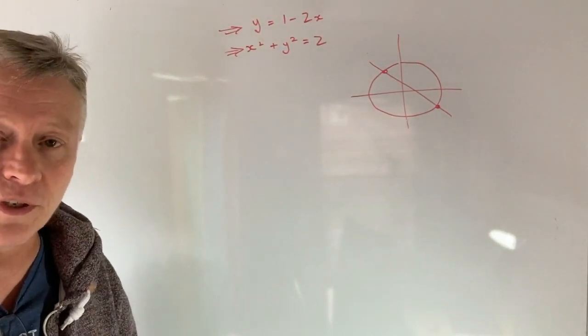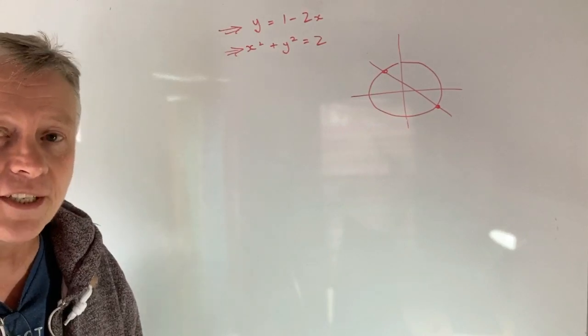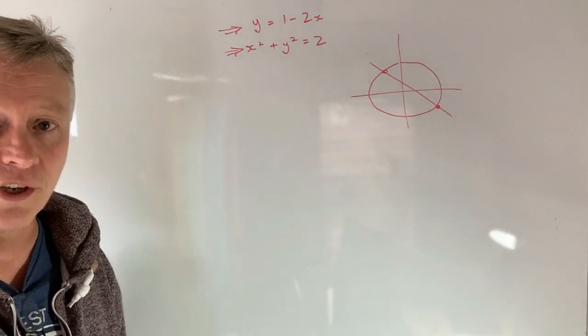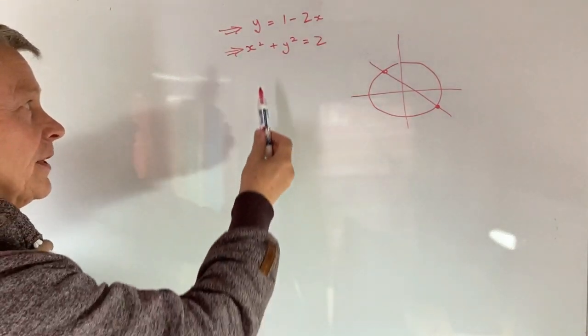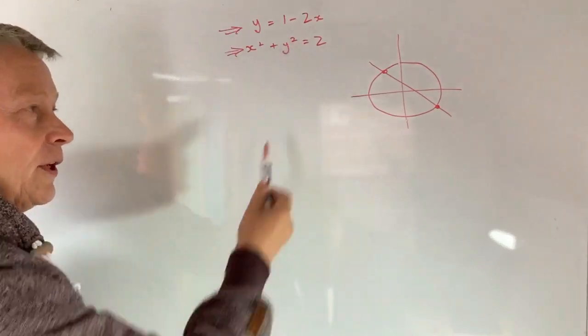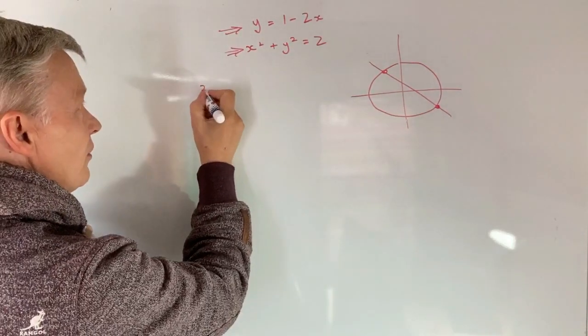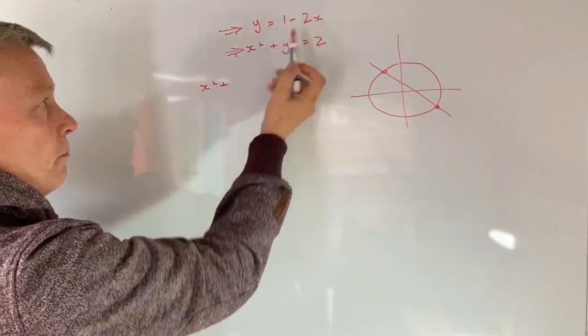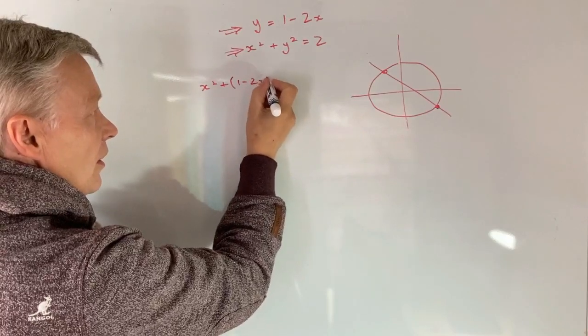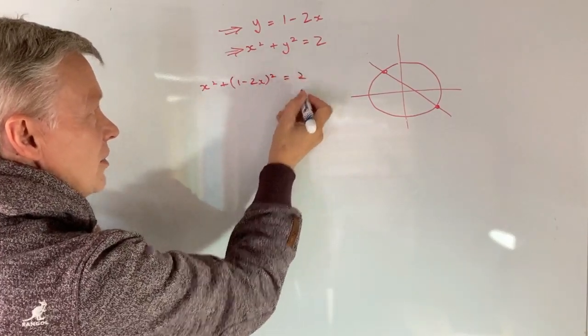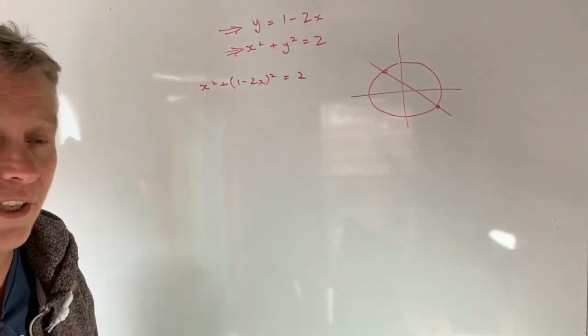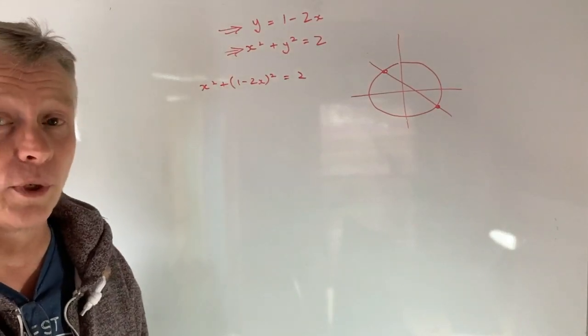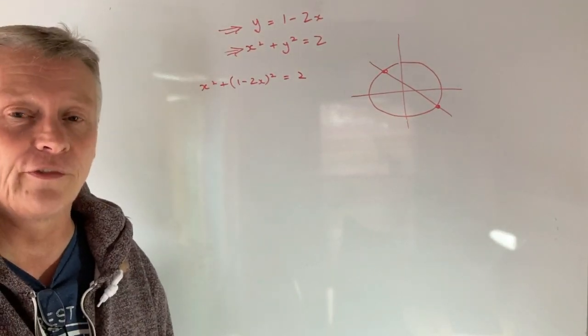So the way that we normally do that is we use something called substitution and what that means is taking the value of y and plugging it straight into the second equation. So rather than writing x squared plus y squared equals 2 what I'm going to do is I'm going to write x squared plus and rather than y squared 1 minus 2x all squared equals 2. So all I've simply done is I've taken that value of y and plugged it straight into the equation and then really all we're going to do is we're going to solve for the value of x.